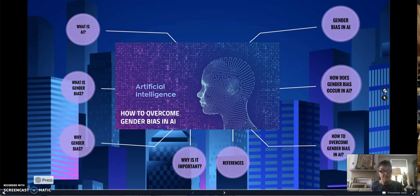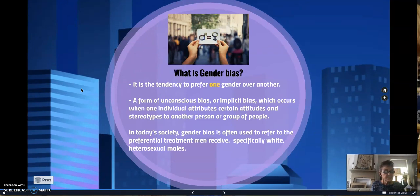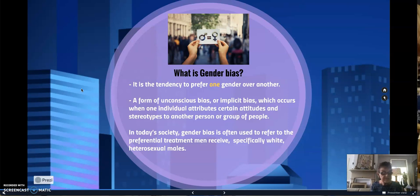There are many incidences of AI adopting gender bias. What is gender bias? Well, to make it simple, gender bias is the tendency to prefer one gender over another. It occurs when an individual attributes certain attitudes and stereotypes to another person or group of people. In today's society, gender bias is often used to refer to the preferential treatment men receive, specifically white, heterosexual males. Bias is prevalent in every aspect of our lives and our society, and biases can cause us to form prejudices against others, which allow for inequalities to form.